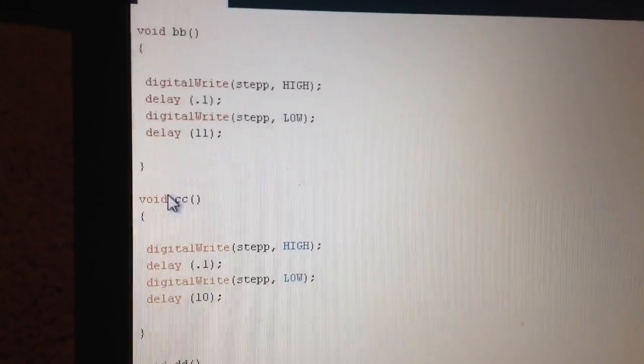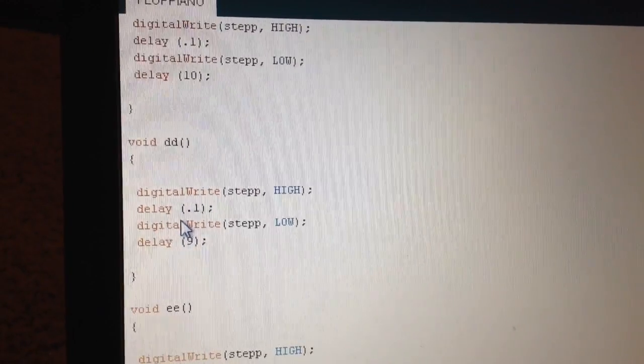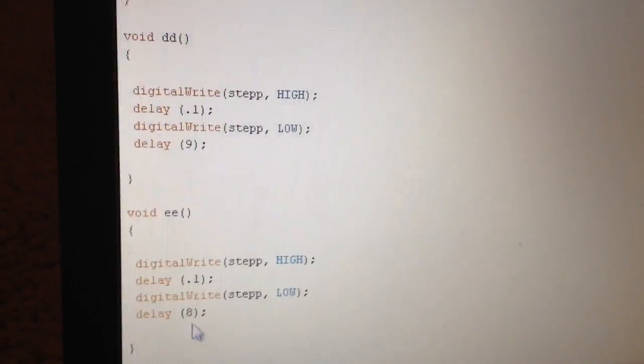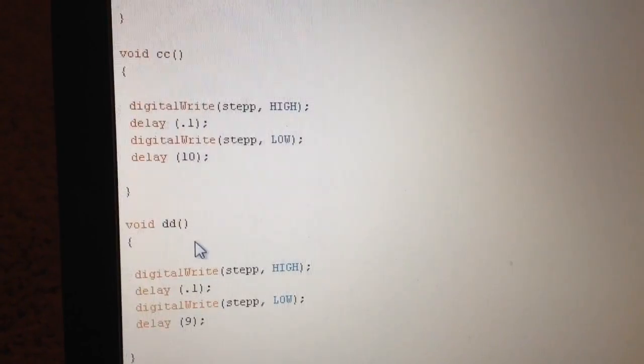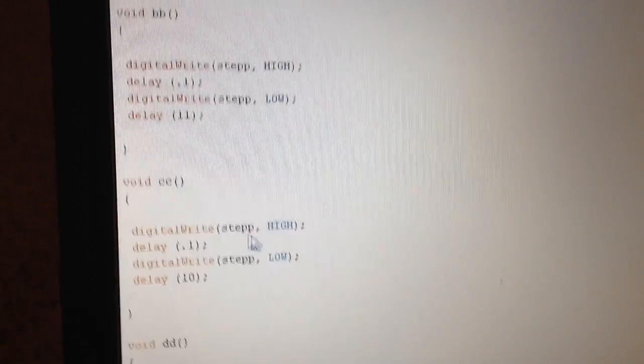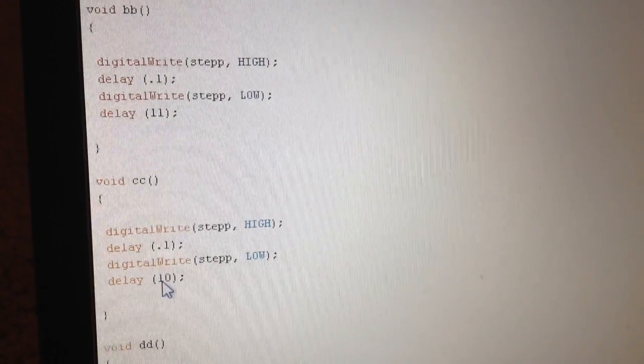When you see it and it says double C, that just means C one octave higher. And same with all the other double letters. As you can see, all the numbers on these are different. The only number that stays the same is how long this stepper motor is on for. Only the delay is changing, and that changes the tone.